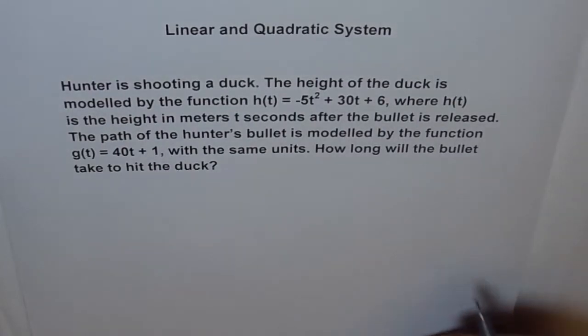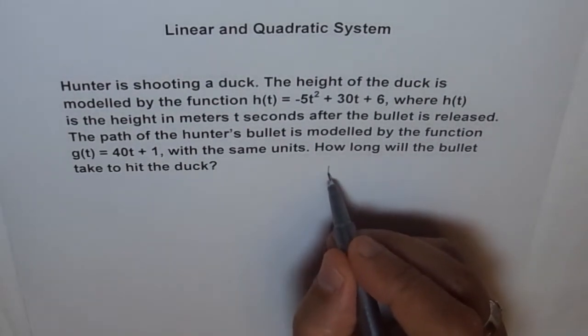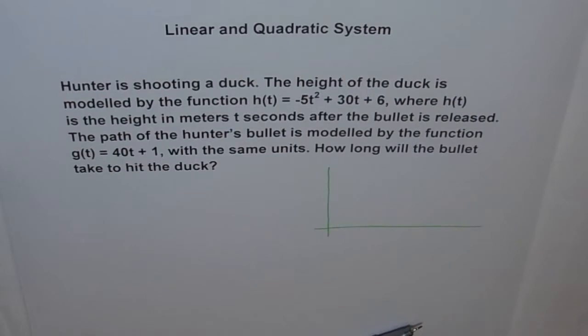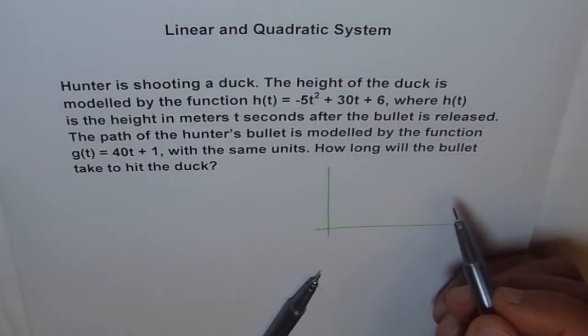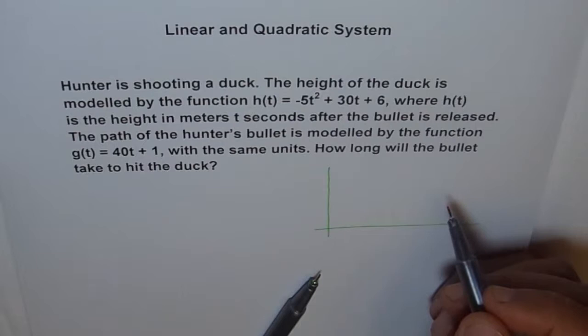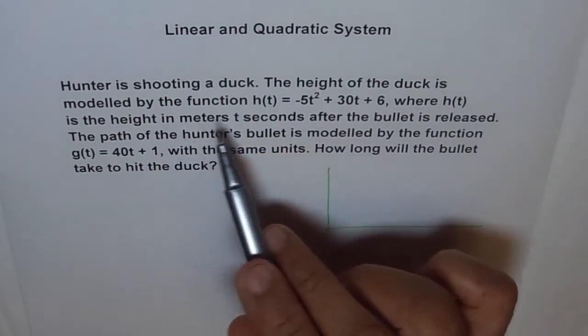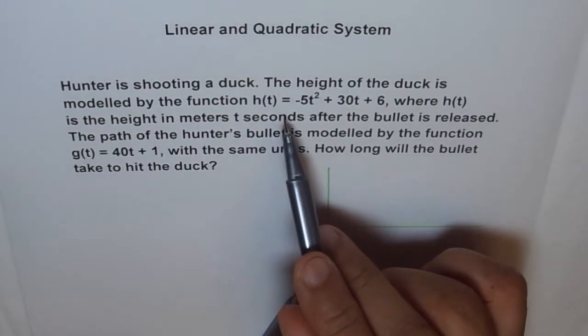So that's the kind of problem. We can visualize it first. Think like this. This is our axis and we know we are in the first quadrant because both time and height are positive. Now, let me first draw this function h(t), height of the duck.